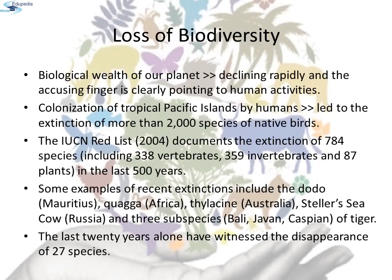Loss of Biodiversity: while it is doubtful if any new species are being added through speciation, there is no doubt about their continuing losses. The biological wealth of our planet has been declining rapidly, and the accusing finger clearly points to human activities. The colonization of tropical Pacific islands by humans led to the extinction of more than 2,000 species of native birds. The IUCN Red List of 2004 documents the extinction of 784 species including 338 vertebrates, 359 invertebrates, and 87 plants in the last 500 years. Recent extinctions include the dodo from Mauritius, quagga from Africa, thylacine in Australia, Steller's sea cow from Russia, and three subspecies of tiger — Bali, Javan, and Caspian.